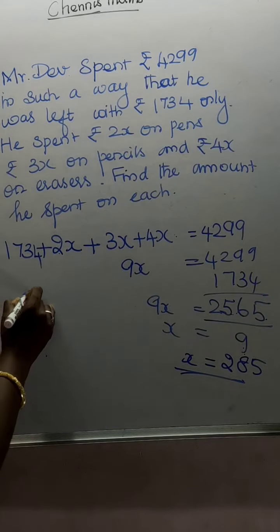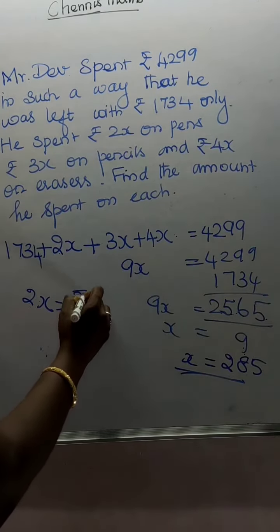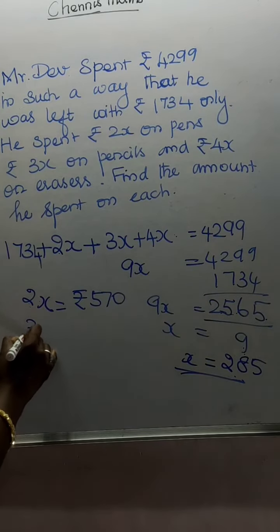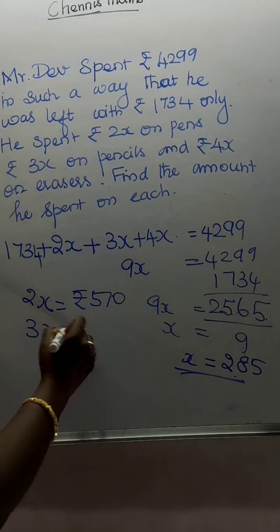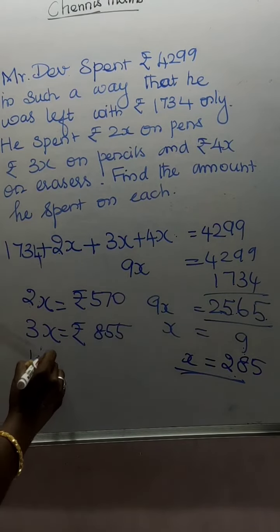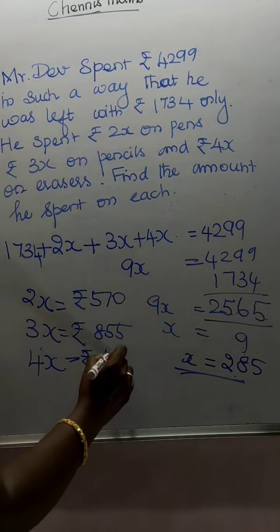So rupees 2x on pens, what is that 2x on pens? Rupees 2 into 285, that is 570. And 3x on pencils, that is 855. And rupees 4x on erasers, 1,140.